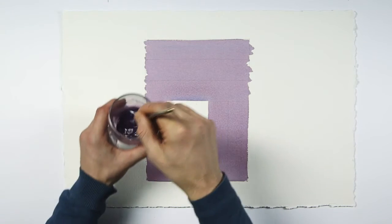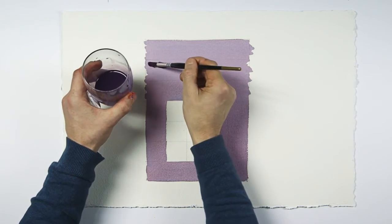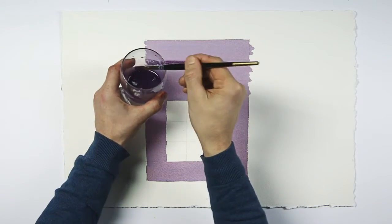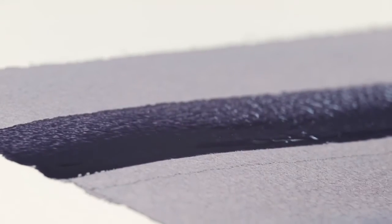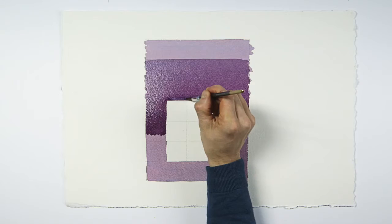Once dry I'm laying down the second medium wash which is darker than the first. So now including the white of the paper we have three tonal values.